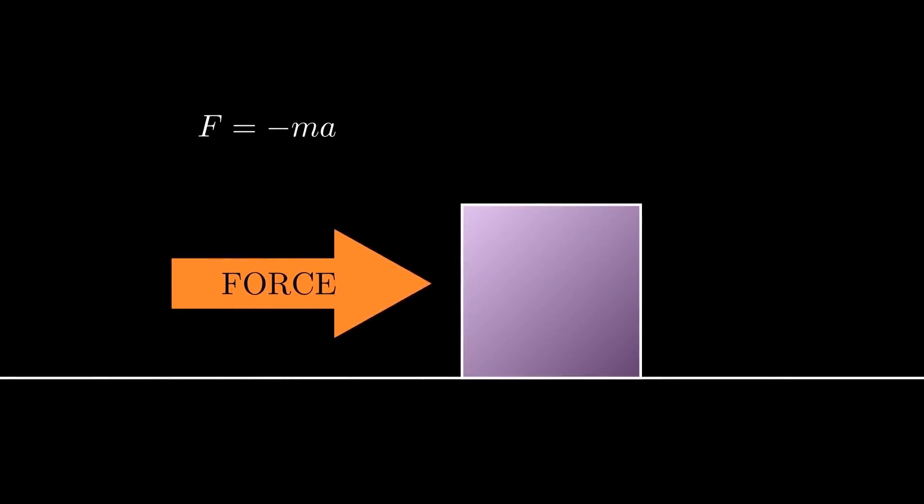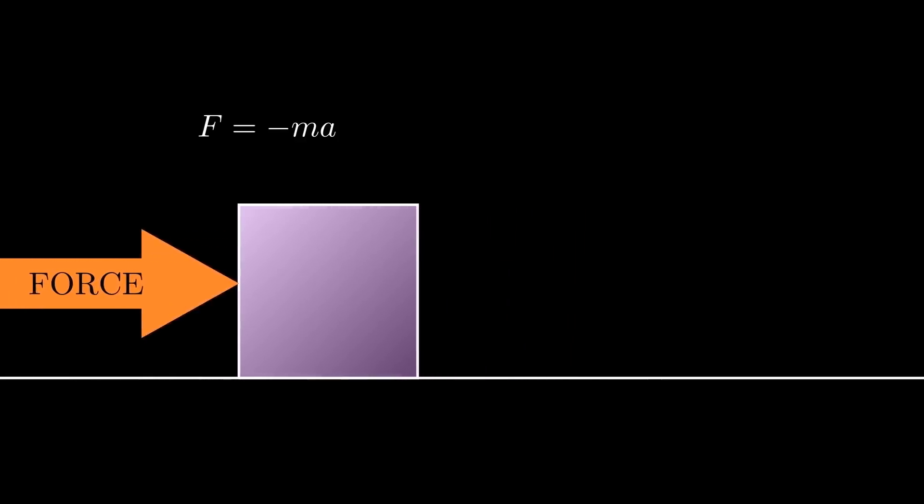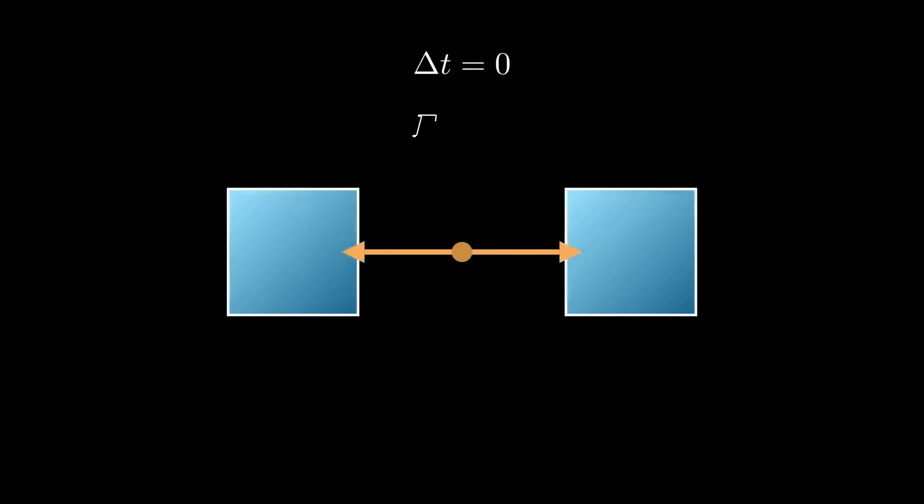But the problem with negative mass is that it moves in the wrong direction specifically in response to forces. And you're not actually looking at forces if you model the collision as a perfect, instantaneous bounce.